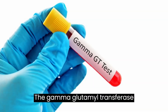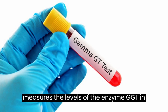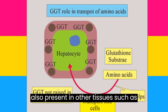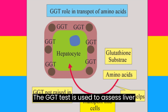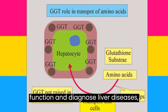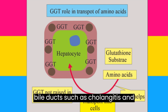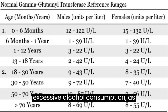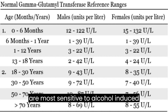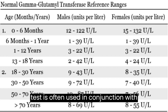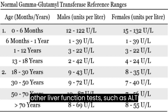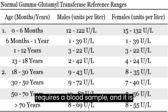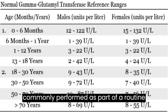The gamma-glutamyl transferase (GGT) test is a blood test that measures the levels of GGT in the blood. GGT is primarily found in the liver, but it is also present in other tissues such as the pancreas, kidneys, and spleen. The GGT test is used to assess liver function and diagnose liver diseases, particularly diseases that affect the bile ducts, such as cholangitis and biliary obstruction. Elevated levels of GGT are also indicative of excessive alcohol consumption, as GGT is one of the liver enzymes most sensitive to alcohol-induced liver damage. The GGT test is often used in conjunction with other liver function tests such as ALT and AST, and is a simple, non-invasive test requiring only a blood sample.